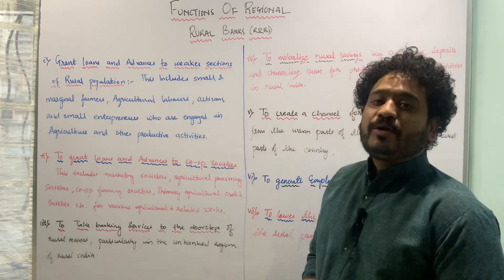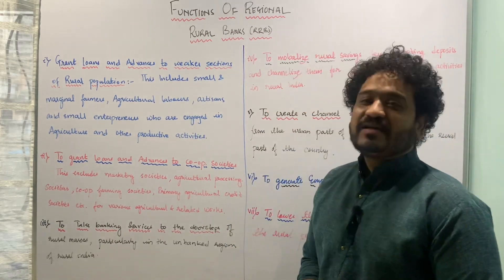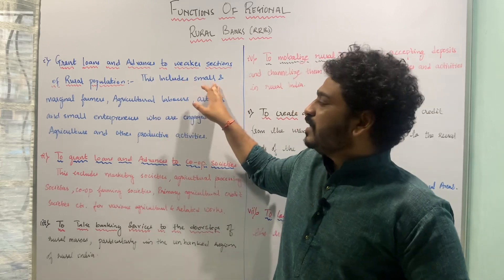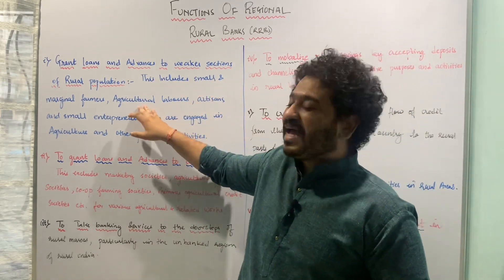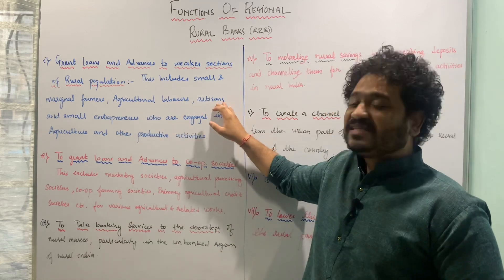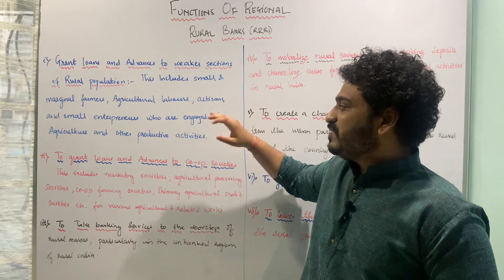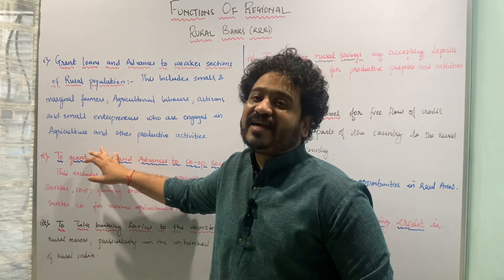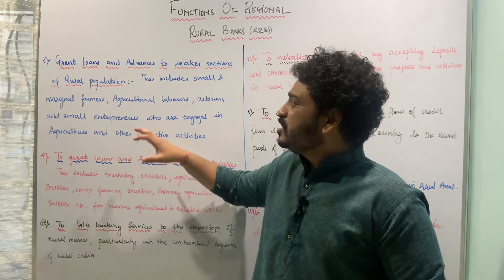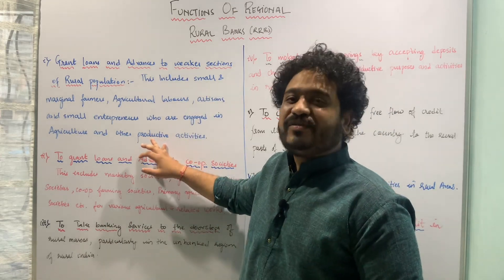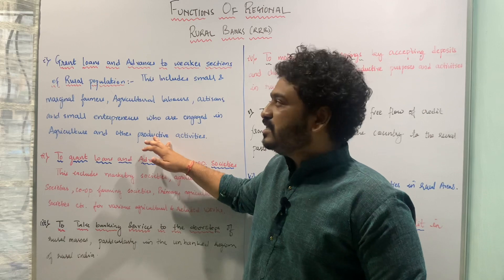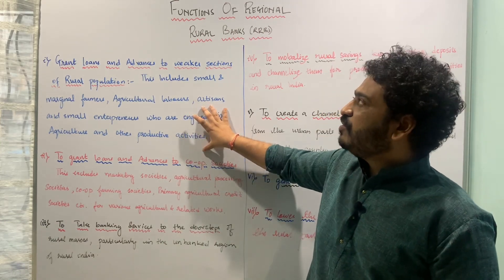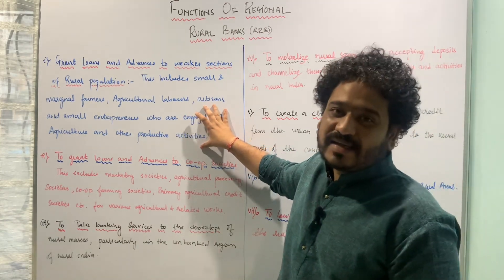The first function is granting of loans and advances to weaker sections of rural population. These weaker sections include small and marginal farmers, agricultural labourers, artisans and small entrepreneurs in the rural parts of the country, as well as individuals or firms engaged in agriculture and allied activities and other productive activities in the rural parts of the country.